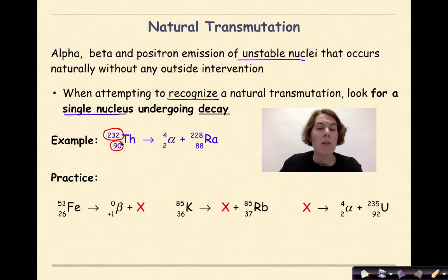So in this example of thorium-232, we can see that thorium is a pretty heavy element here. It's got a very large mass number, it's got a very large atomic number. This is a decay reaction because we only have one reactant and more than one product here. When this undergoes alpha decay, it's going to form radium-228.